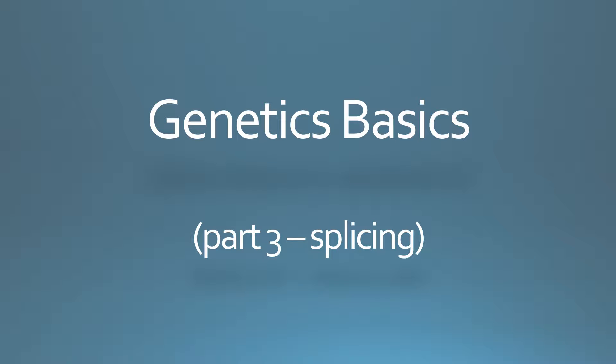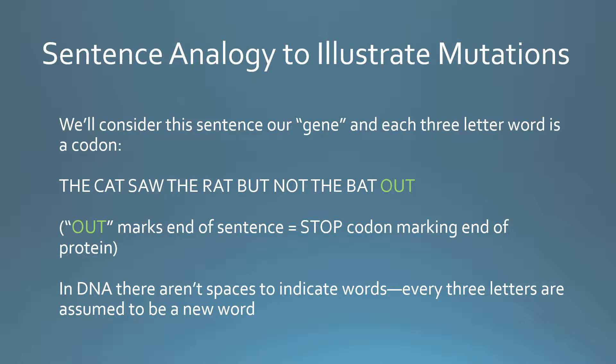This video is part three of the genetics basics talk and covers splicing of DNA and splice mutations. To go back to what was covered in the last videos, we're illustrating what happens with DNA using a sentence made up of three-letter words, because every three bases of DNA specifies a particular amino acid to be produced in the protein.